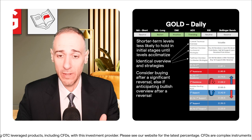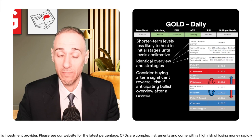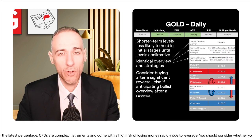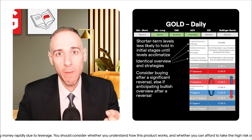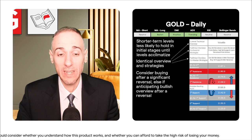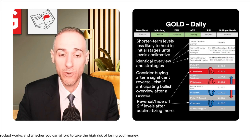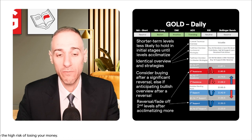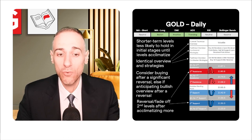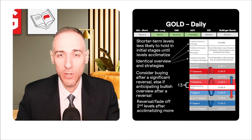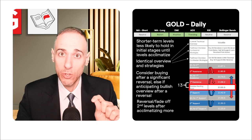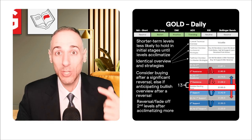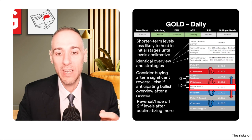The daily time frame has a similar overview with shorter-term levels that are less likely to hold in the initial stages of volatility. Levels adjust more quickly on the daily than the weekly — the weekly needs more time given the longer look-back period. The gap from RSP to the first level on the daily is 13, and from the first to the stop loss is 6, depending on your risk/reward ratio. If you're watching mid-week, adjust accordingly; under a volatile overview you can change levels even intraday.